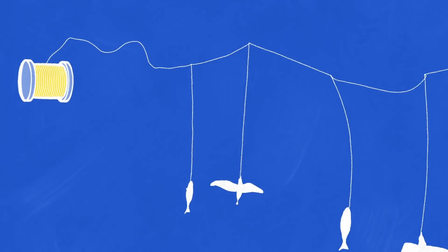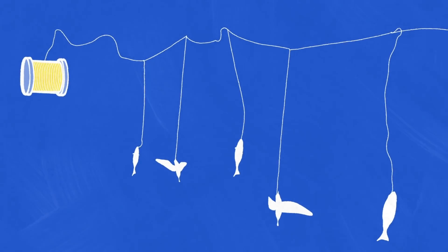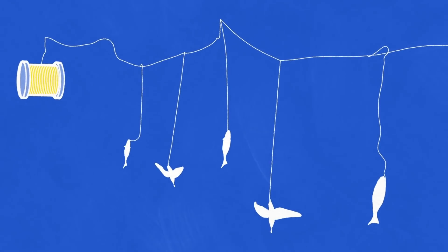Like long lines, they stretch up to 150 kilometers and can inadvertently hook or entangle seabirds, turtles and marine mammals. Each year an estimated 8,000 albatrosses die this way.